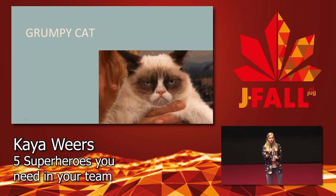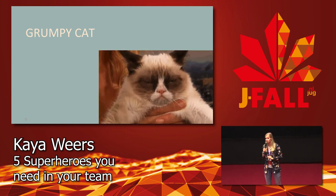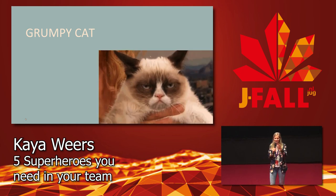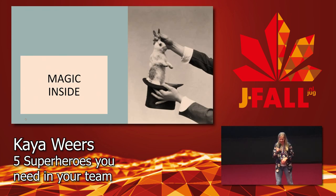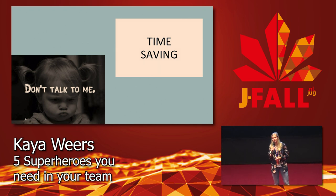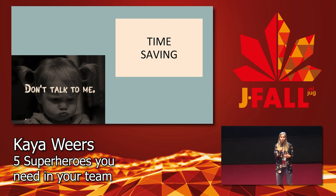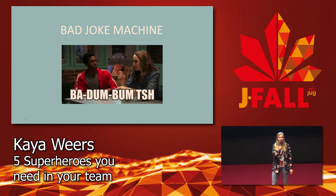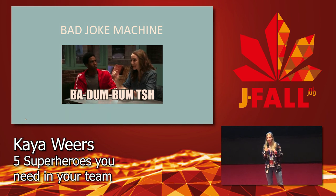Our first hero is the Grumpy Cat. Sometimes you won't even notice they're there until they start complaining again. If I say 'good morning,' I normally get a look. But there's magic inside — when you think they're ignoring you, they're actually thinking about a brilliant solution to your problem. Their brain is making connections. Also, by acting unapproachable, they're saving time — you only go to their desk when it's really necessary.